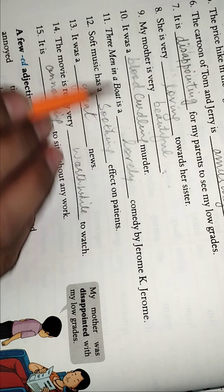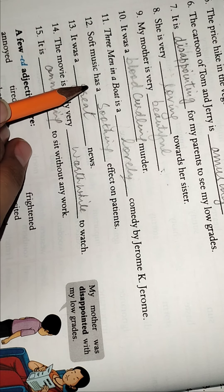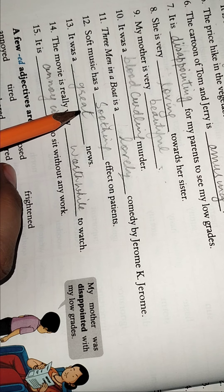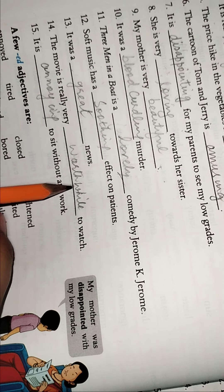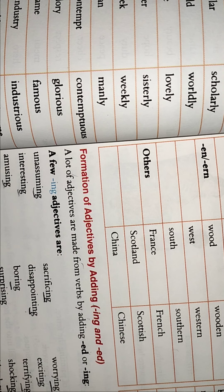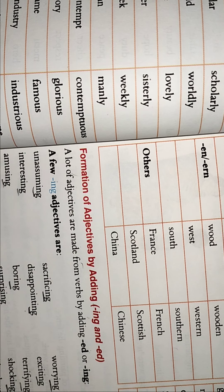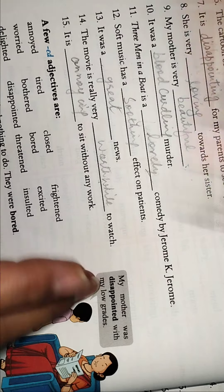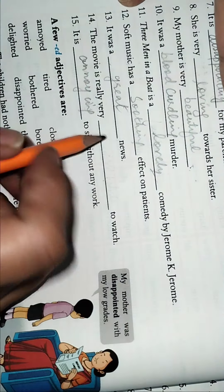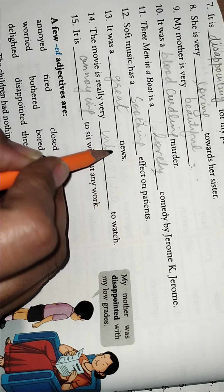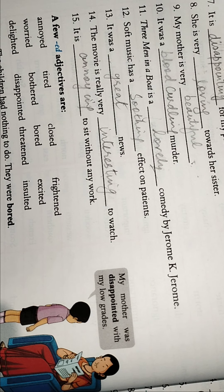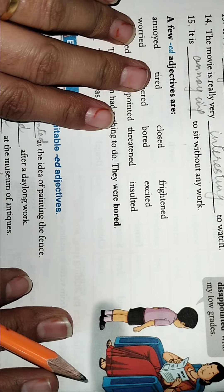For my parents to see my low grades. Then she is very loving towards her sister. My mother is very beautiful or any word, any adjective you can add here. My mother is very, you can write intelligent or you can say very warm-hearted, anything you feel like. It's a blood-curdling murder. Three men in the boat is a lovely comedy.